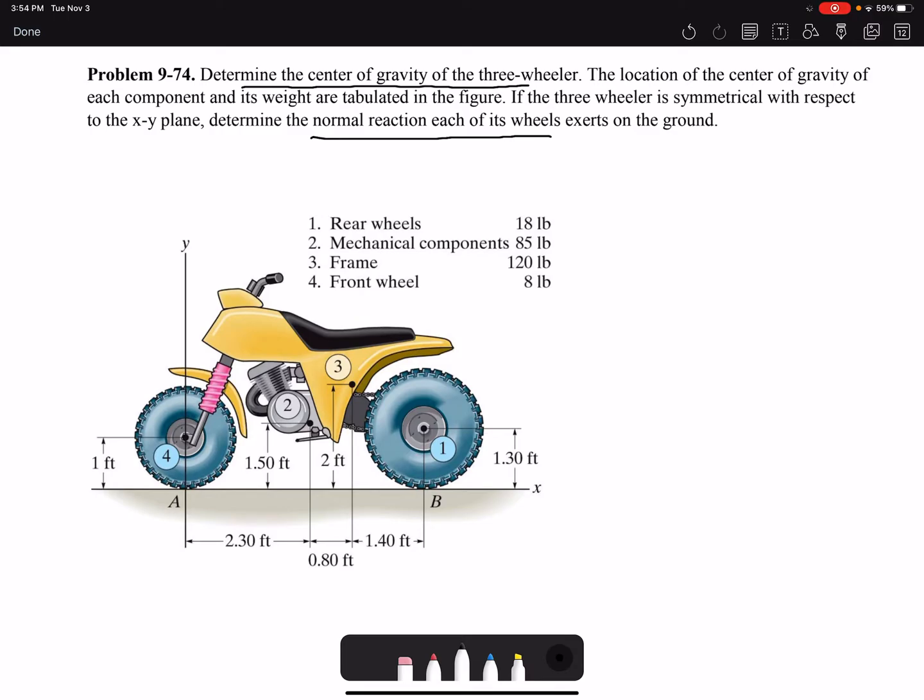So to find the center of gravity, we have to use the composite body equation where X bar is summation of X bar I W I. Here I is changing from one to four because we have four components divided by the total weight. So the denominator is the total weight W. We can find W by adding all these components together which gives us 231 pounds.